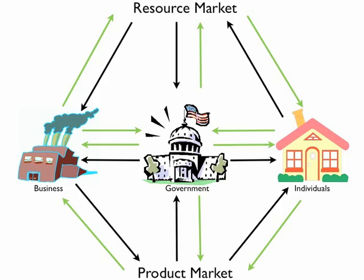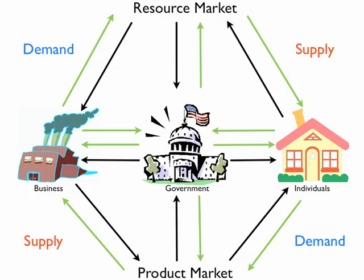All of the green arrows represent the circular flow of money in a free market economy. Quick review: businesses supply goods and services in the product markets; individuals demand goods and services in the product markets. Individuals supply land, labor, and capital in the resource markets; businesses demand land, labor, and capital in the resource markets.